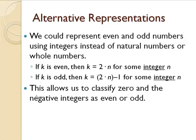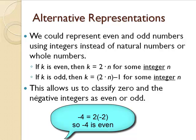We can represent even and odd numbers using integers instead of natural numbers or whole numbers. So we could say if k is an even number, then k is 2 times n for some integer n. Or if k is an odd number, then k is 2 times n minus 1 for some integer n. This allows us to classify 0 and the negative integers as either even or odd. So for example, if we wanted to say is negative 4 even or odd, negative 4 would be 2 times negative 2, therefore negative 4 is an even integer.